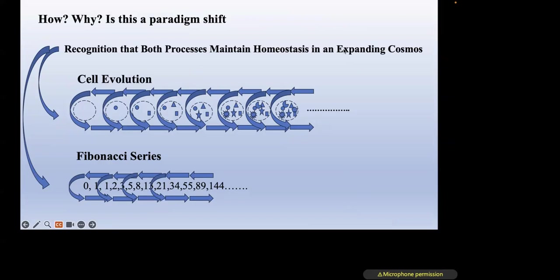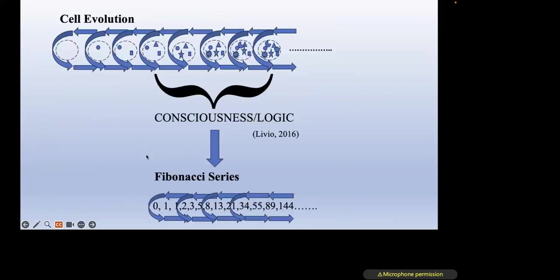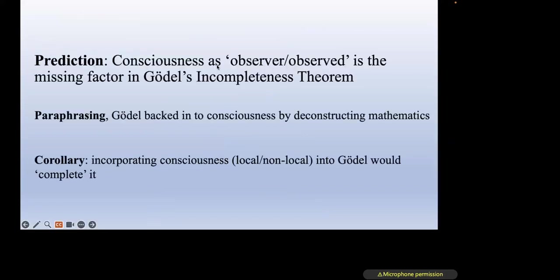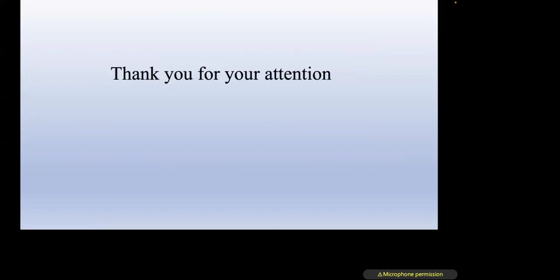This convergence of evolution and mathematics is a paradigm shift in my opinion. The recognition that both cellular evolution and the Fibonacci sequence maintain homeostasis in an expanding cosmos potentially explains this convergence. Between physiologic evolution and consciousness — as described by Mario Livio in his golden ratio book — we can contemplate the logic of the Fibonacci series. My prediction is that consciousness acts as both observer and observed, and that is the missing factor in Gödel's incompleteness theorem. Gödel backed into consciousness by deconstructing mathematics. Incorporating consciousness — both local and non-local — into Gödel would complete it.